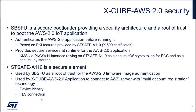Xcube AWS 2.0 security: SBSFU is the secure bootloader. It provides a security architecture and a root of trust to boot the AWS 2.0 IoT application. It authenticates the application before running it, and provides secure services at runtime through KMS, exposed via the standard PKCS11 interface. It relies on STSAFE A110 as a secure hardware crypto token for elliptic curve cryptography and secure key storage. STSAFE A110 is used by SBSFU as a root of trust for firmware image authentication and by the Xcube AWS 2.0 application to connect to AWS with multi-account registration.